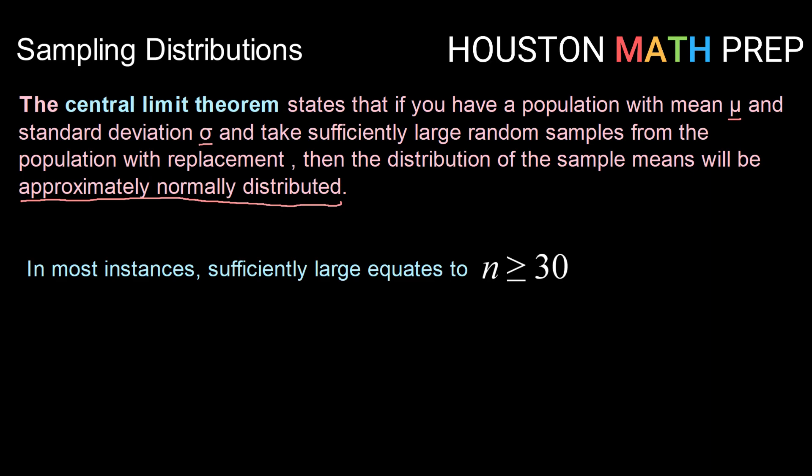Now notice the central limit theorem references sufficiently large. So what does that mean? Well, in most instances, sufficiently large actually equates to samples of greater than or equal to 30. The only exception to that is if you're starting with a normally distributed population, then you don't even need 30 to have a normally distributed sampling distribution. But for all others, 30 or greater will get you a normally distributed sampling distribution.